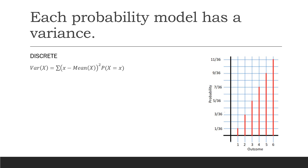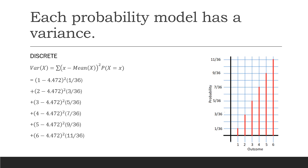For example, for the outcome 1, we take 1 minus the mean, which was 4.472, square that difference, and multiply by the probability that x equals 1. Then for the next value, 2 minus 4.472, square that deviation, and multiply by the probability that x equals 2. We continue through x equals 3, 4, 5, and 6, and add all those values together to get a variance of approximately 1.97.